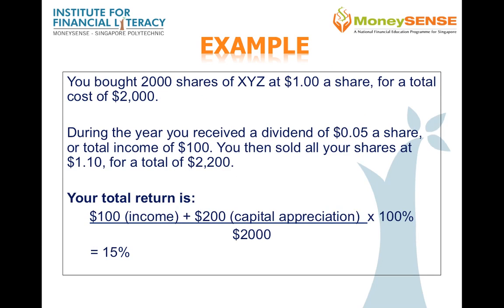In this example, you have bought 2,000 shares of XYZ at $1 a share for a total of $2,000. During the year, you received a dividend of $0.05 a share, or total income of $100. You then sold your shares at $1.10 each, for a total of $2,200. Your total return is ($100 income + $200 capital appreciation) / $2,000 × 100%, which gives you a total return of 15%.